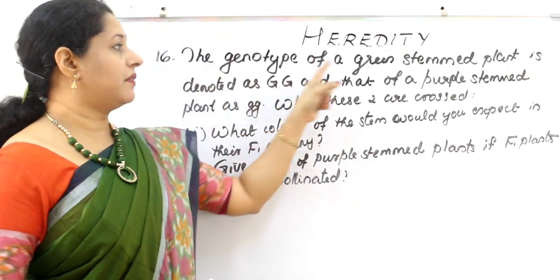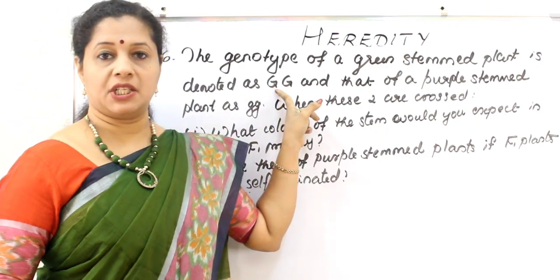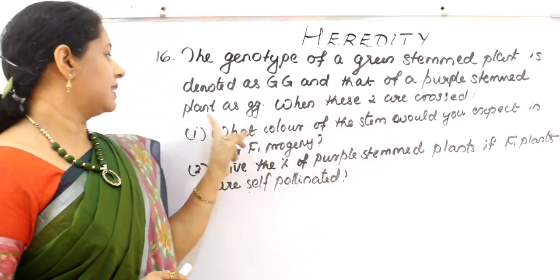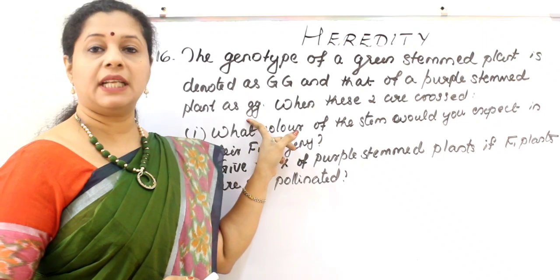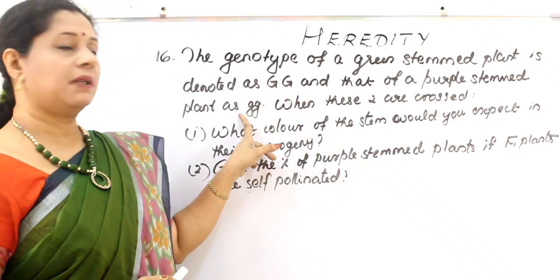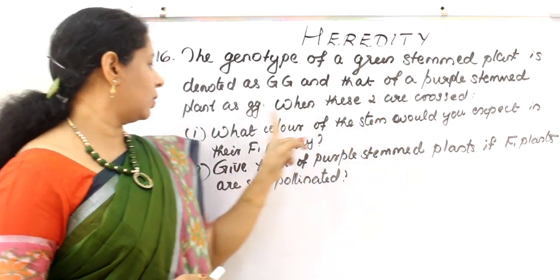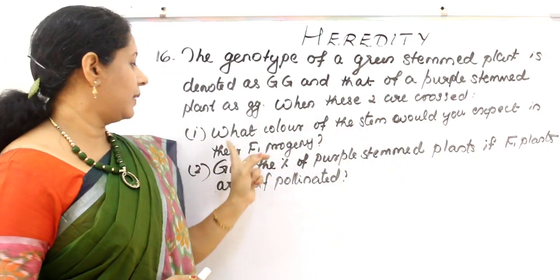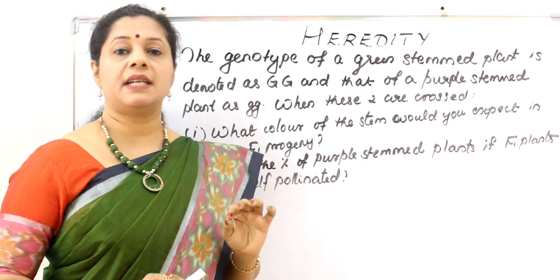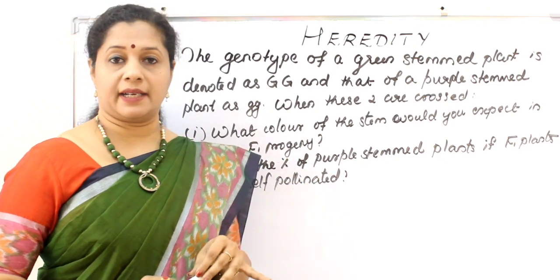The genotype of a green-stemmed plant is capital G capital G, and that of a purple-stemmed plant is small g small g. So green is dominant and purple is recessive. When these two are crossed, the F1 progeny will show the dominant character — green — since the capital letter indicates the dominant trait.